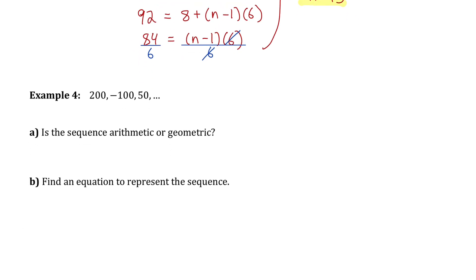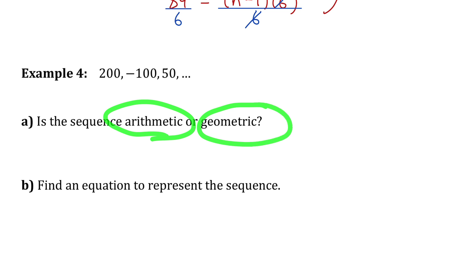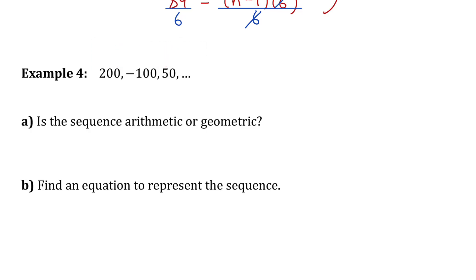Example 4 gives a sequence and asks whether it's arithmetic or geometric. To get from 200 to negative 100 you subtract 300, but to get from negative 100 to 50 you add 150 — so there's no constant difference, meaning it's not arithmetic. Checking ratios: negative 100 divided by 200 is negative 1 half, and 50 divided by negative 100 is also negative 1 half. There's a constant ratio, so this is a geometric sequence.